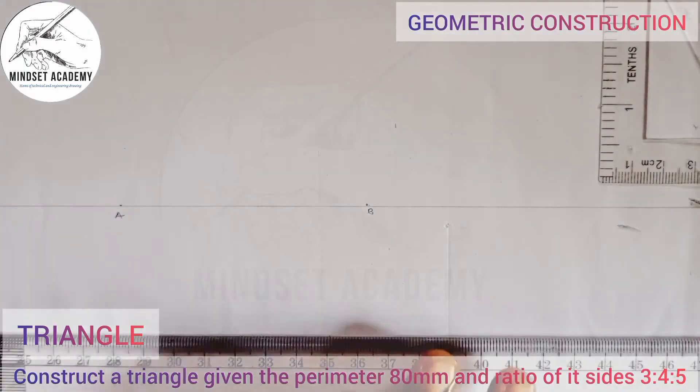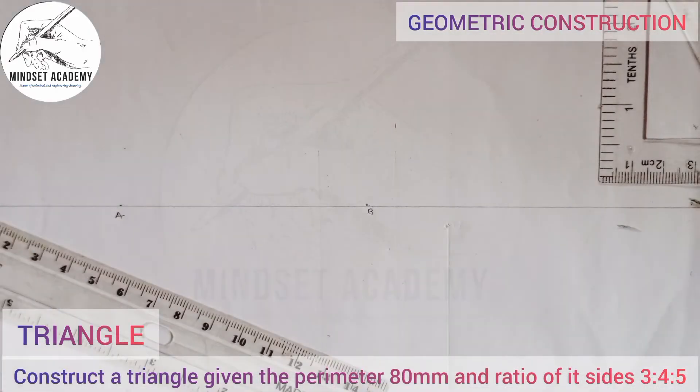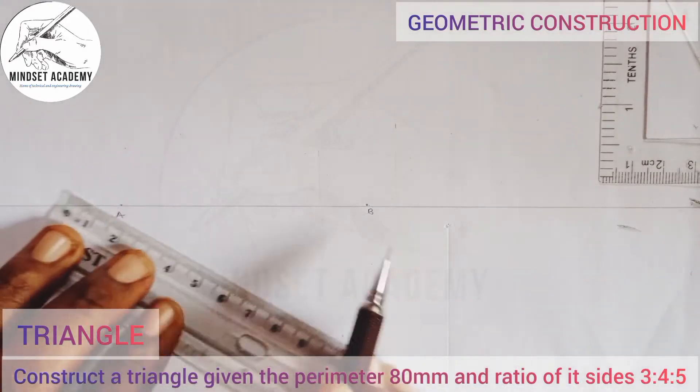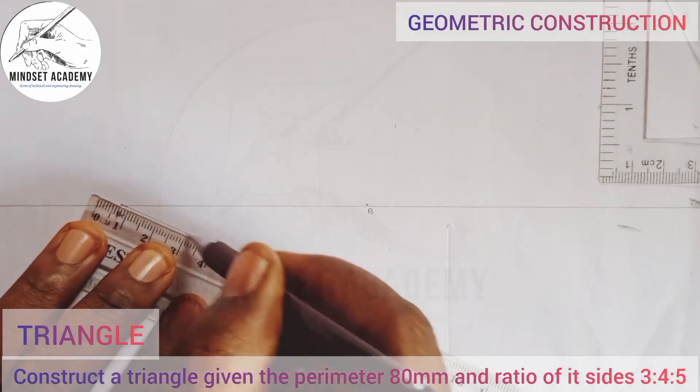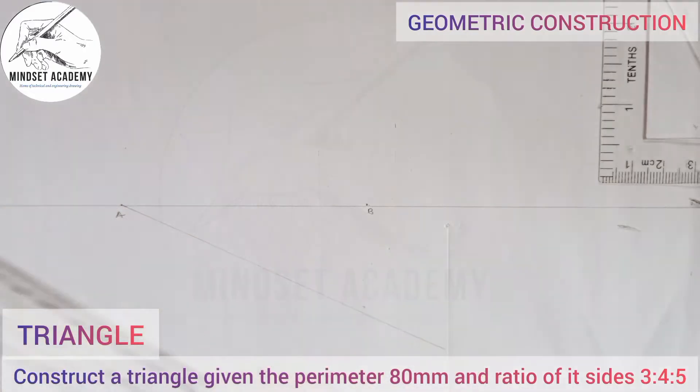Now draw a line that is inclined to AB using a faint line. Next, divide this line into the total addition of the ratios. The ratios are 3:4:5, so 3 plus 4 is 7, 7 plus 5 is 12. So you divide this line into 12 parts.